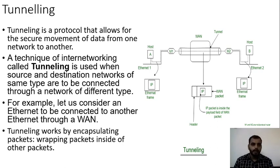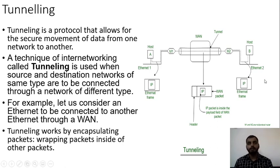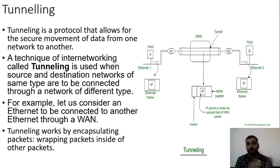A technique called tunneling is used when source and destination networks of the same type are to be connected through a network of a different type. For example, here we have internet one type of network and internet two type of network, but the channel connecting both networks is a WAN. An Ethernet packet cannot simply be sent over a WAN network because these two are different. So the concept of tunneling is used to communicate, achieved through encapsulation — grouping the data together, encrypting it at the sender side, and decrypting it at the receiver side.